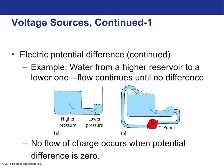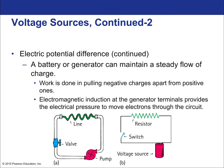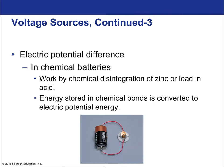Electrical potential difference can be sustained with a steady flow when there is a battery or generator. The battery or generator does work by pulling negative charges apart from positive ones, continually creating that difference. In the case of a battery, there's a chemical process: chemical potential energy is released to do electromagnetic work to pull charges apart, and those charges are then allowed to flow through the circuit. In chemical batteries, they work by the chemical disintegration of zinc or lead in acid, which allows the charge to get pulled apart.